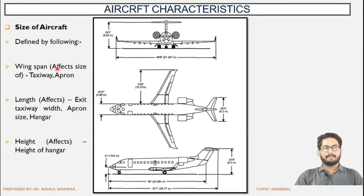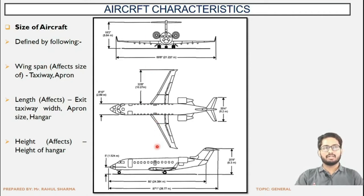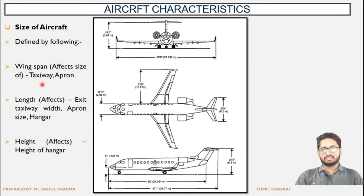The extent of the wingspan will have its say in deciding the area of the apron. Also, the taxiway — because turning and maneuvering operations are to be carried out on the taxiway — the wingspan will have an impact on that as well.